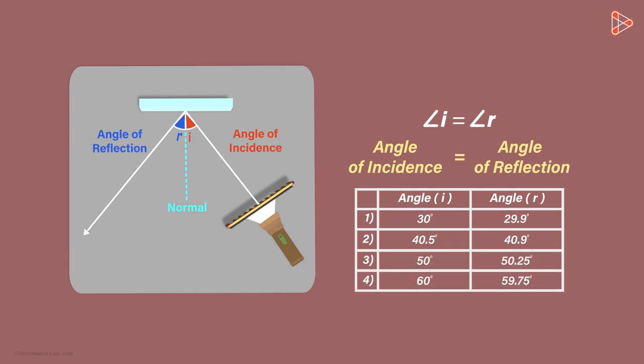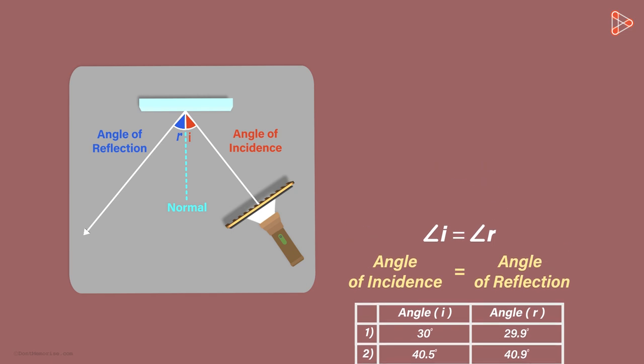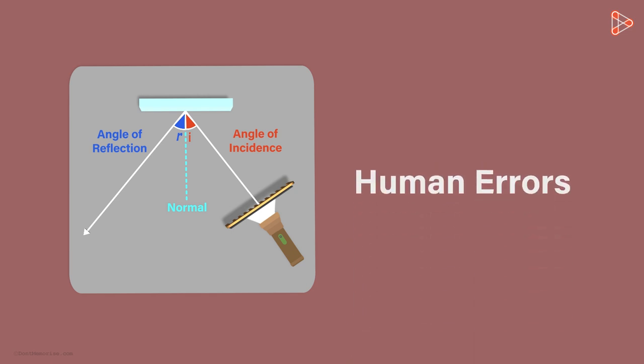Do you notice anything strange here? The first law tells us that angle of incidence is equal to angle of reflection and not approximately equal. Why am I using the word approximately? Well, there are chances of errors that may come about during measurements of things. We can refer to them as human errors.